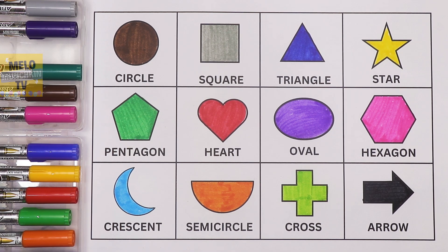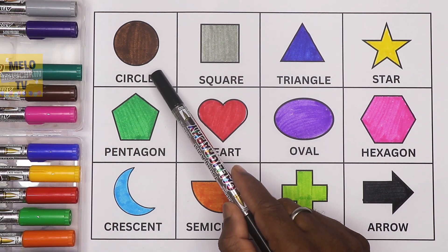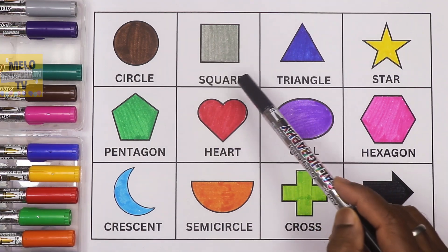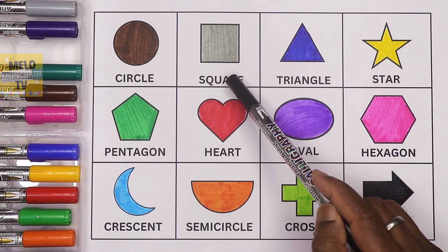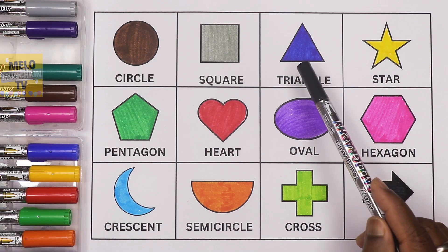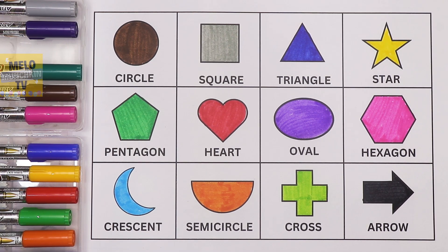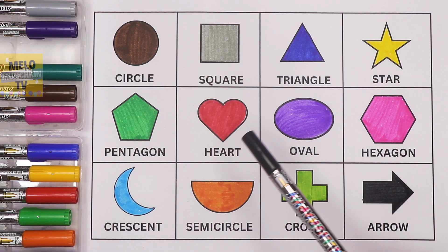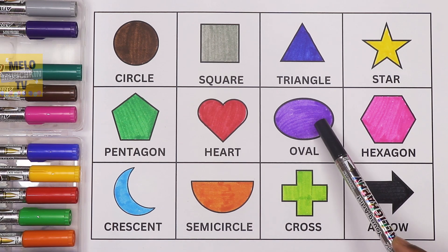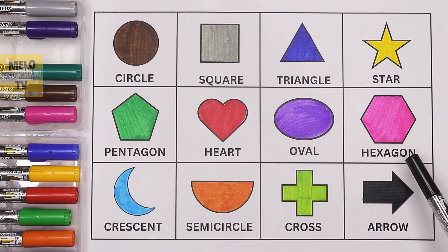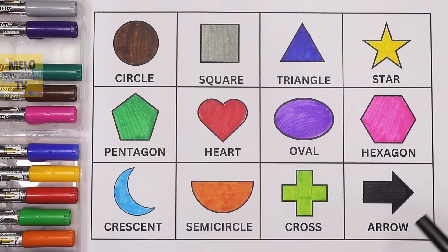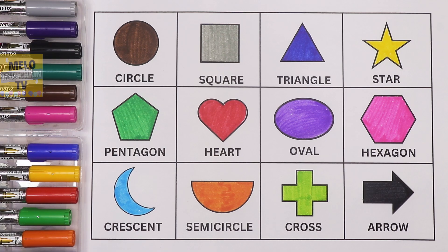Let's repeat once again: first is brown circle, second gray square, dark blue triangle, yellow star, dark green pentagon, red heart, purple oval, pink hexagon, blue crescent, orange semicircle, green cross, black arrow. So that's it for today, kids! I hope you have learned some shapes and colors. If you like this video, hit a thumbs up and share this video with friends. See you in my next video — till then, take care and bye bye!